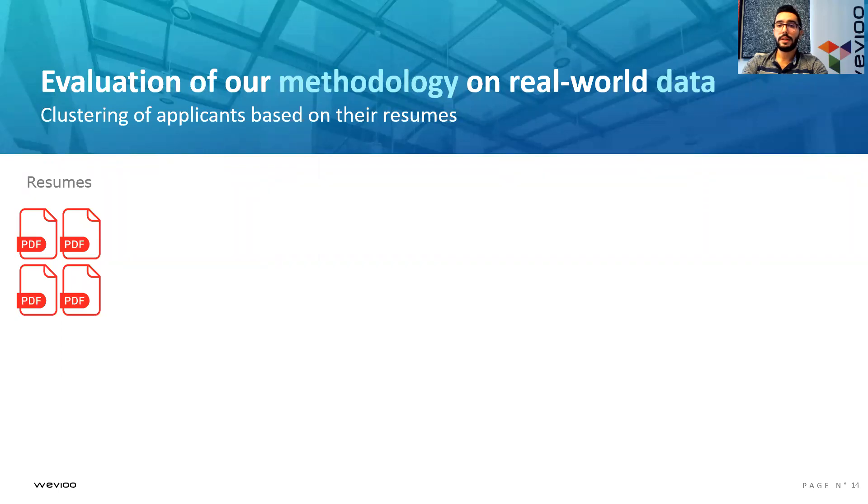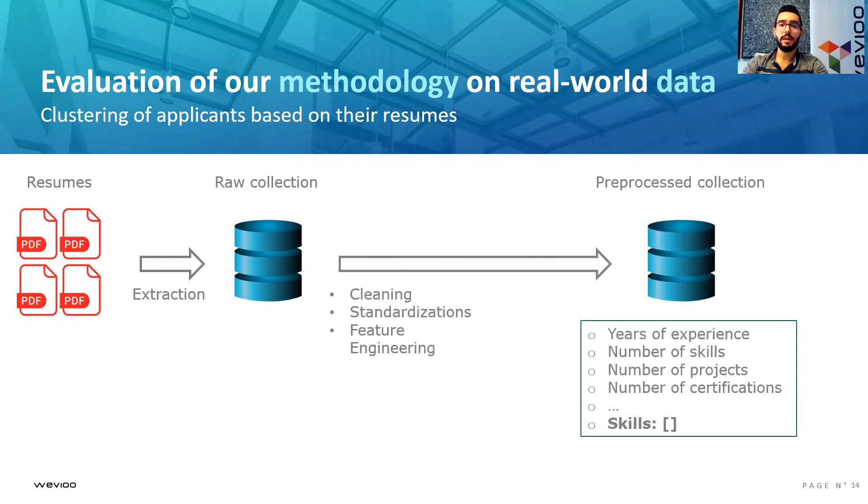Next, we will be presenting an evaluation of our methodology on real-world data, where we aimed to cluster applicants based on their resumes. The pipeline goes from extracting the resumes into a raw collection, then creating a preprocessed collection, where we perform cleanings, standardizations, and feature engineering. The variables of this preprocessed collection are years of experience, number of skills, number of projects, number of certifications, and a multivalued attribute, which is skills.